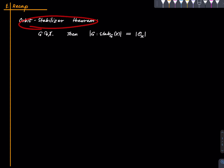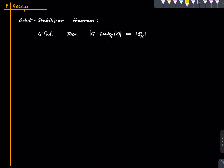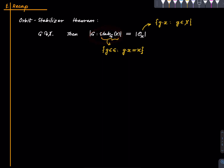Let us recall one fact that we need: the orbit-stabilizer theorem. Fix an action of a group G on a set X. Then we have this equality, where the stabilizer — those group elements which fix x — and this is the orbit, which is the trajectory of x under the action. The stabilizer is a subgroup of G, and this is the cardinality of the set of all left cosets of this subgroup, and this is the cardinality of the orbit.